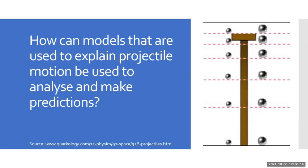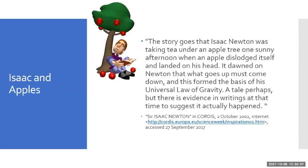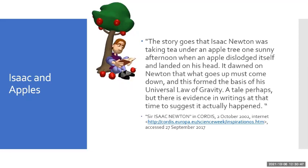So the inquiry question is: how can models used to explain projectile motion be used to analyze and make predictions? Well, the story goes that Isaac Newton was taking tea under an apple tree one sunny afternoon when the apple dislodged itself and landed on his head. It dawned on Newton that what goes up must come down, and this formed the basis of his universal law of gravity. There's evidence in the writing at the time that it actually happened.